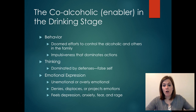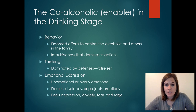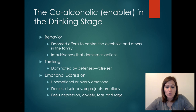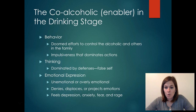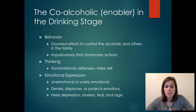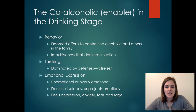Let's talk about the co-alcoholic or the enabler in the drinking stage. This person's behavior is marked by doomed efforts to control the alcoholic and others in the family. They also might be impulsive, and that impulsiveness dominates their actions. This person can be very emotionally reactive, which makes them impulsive in their actions. As far as thinking, it's also dominated by defenses. They have a false sense of self — that they're the one holding the family together, that they are the healthy one.